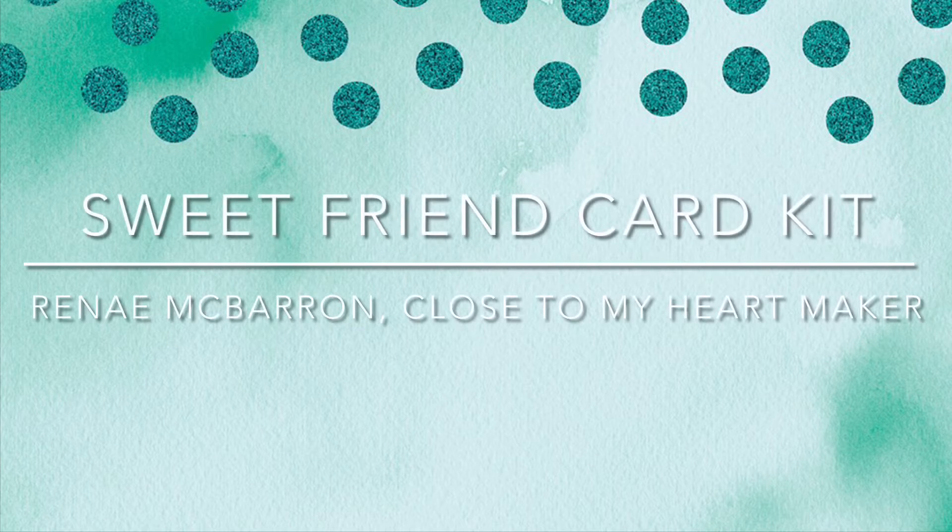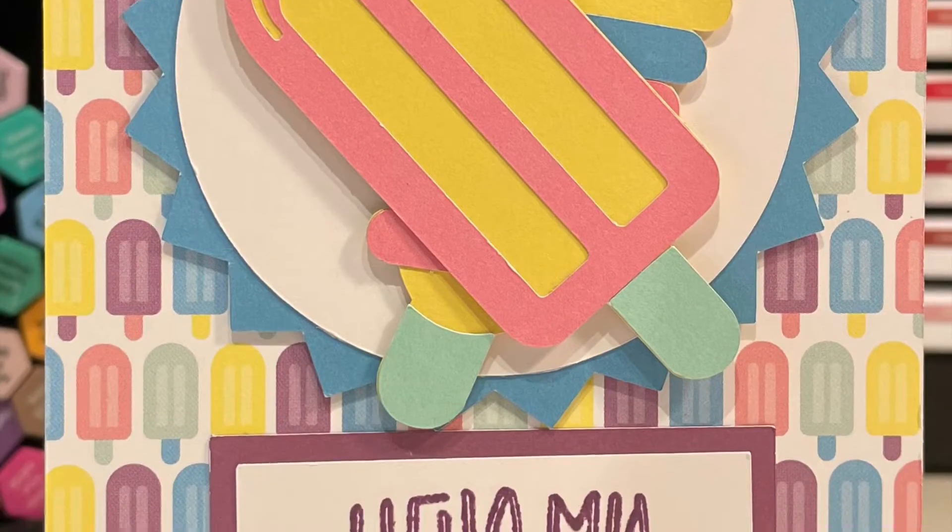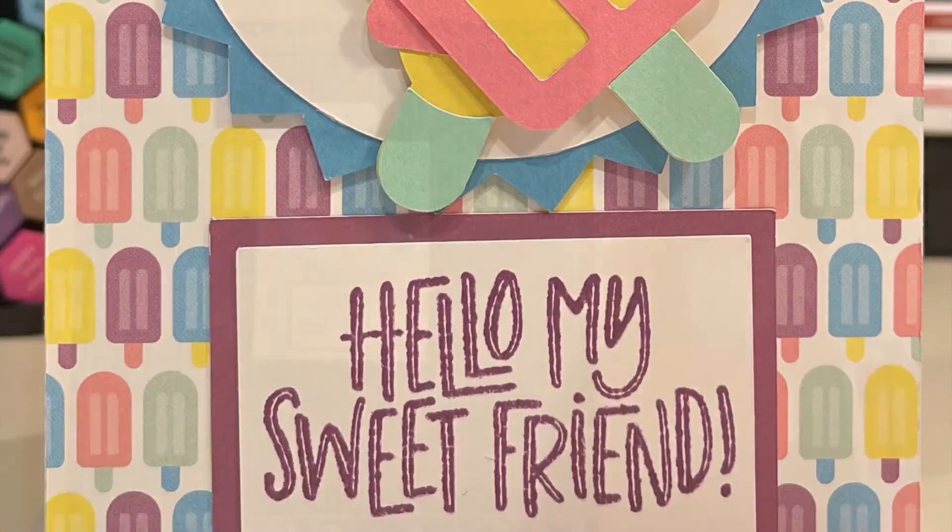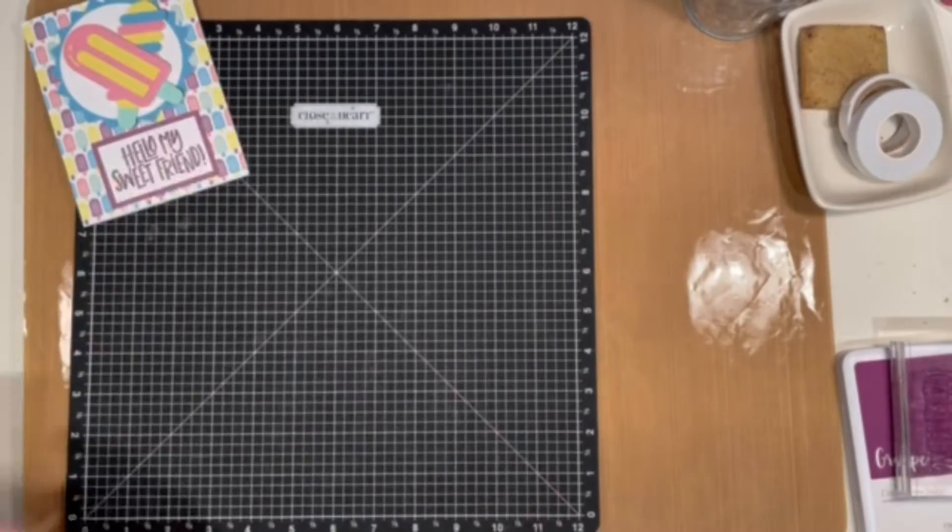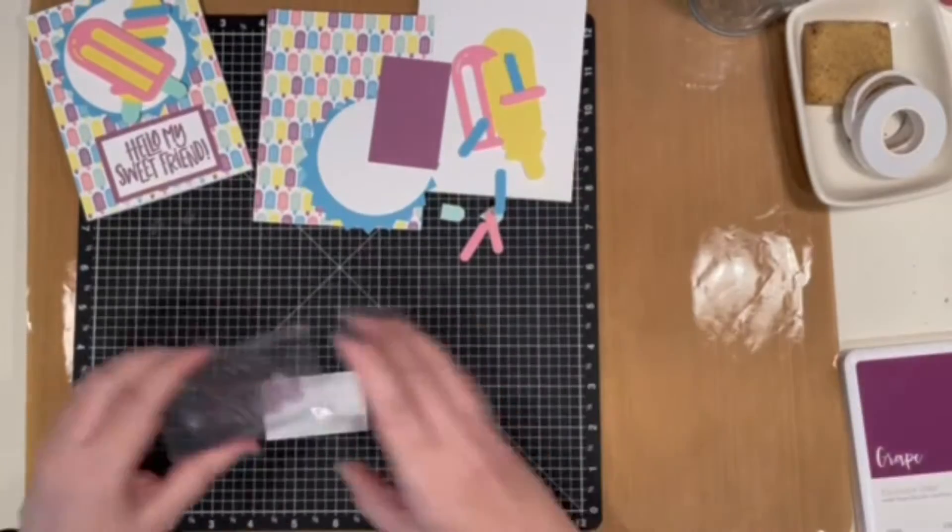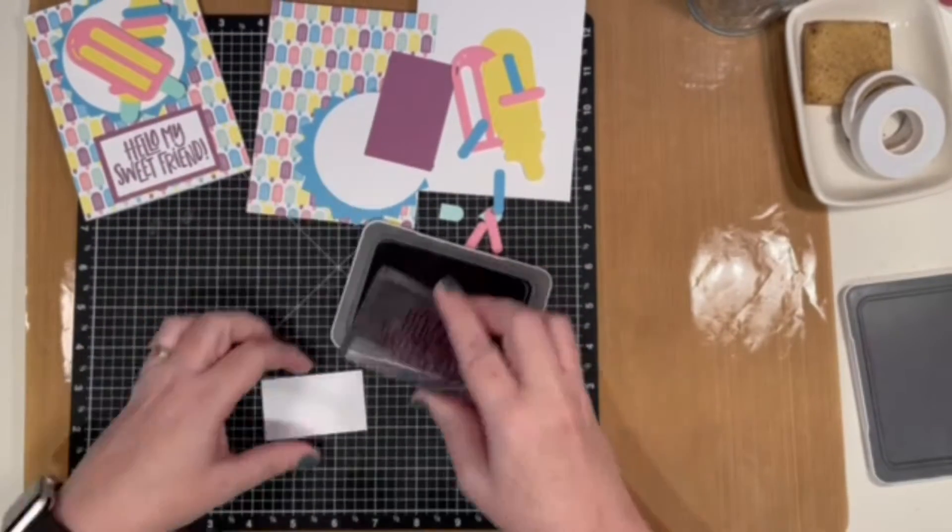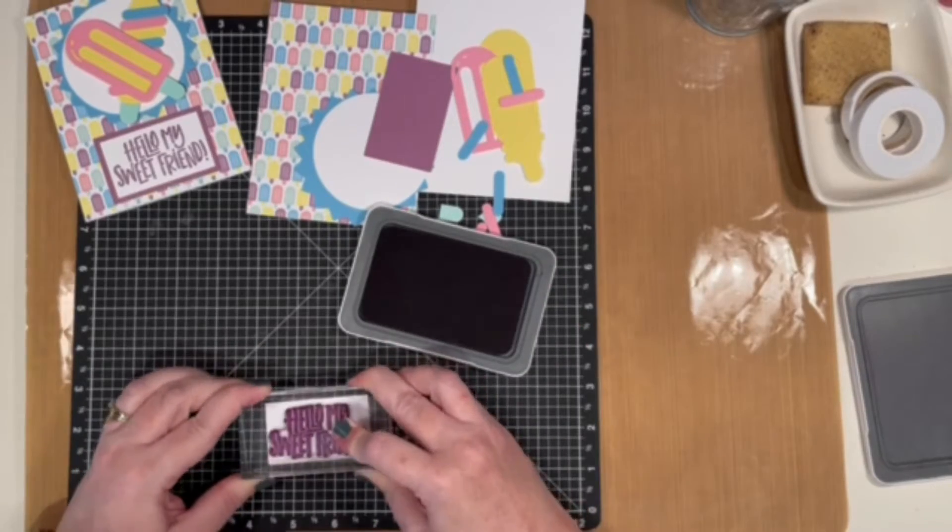Hi, it's Renee. Welcome to the Sweet Friend card kit. This card is made using the Tutti Frutti paper collection. Cardstock colors are Capri, Lemonade, Flamingo, Mint, and Grape. I'm using the grape ink on the sentiment.